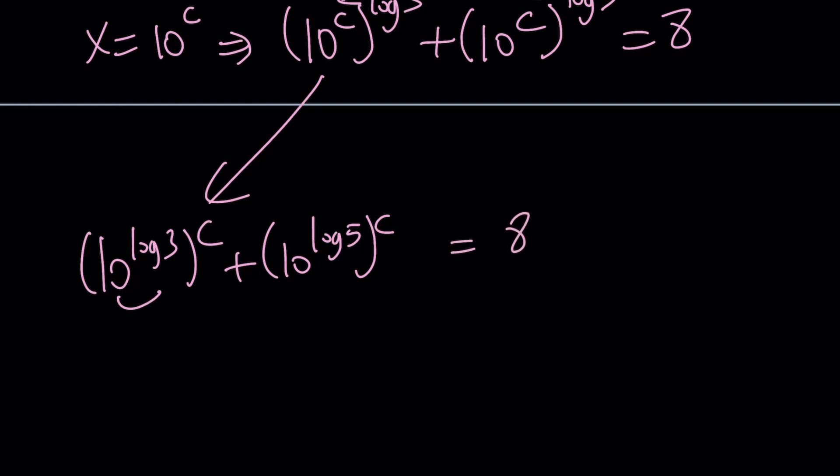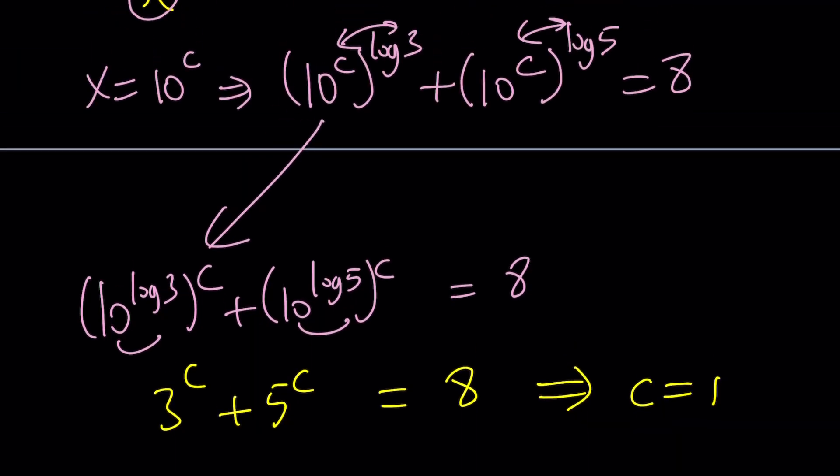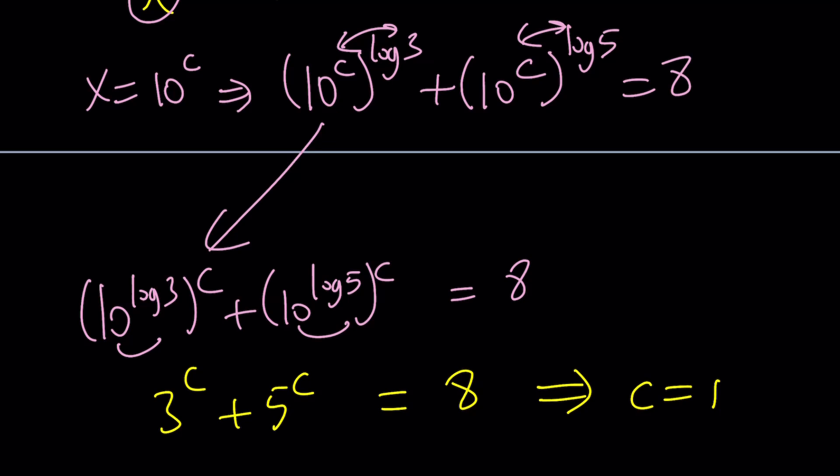And from the formula or the identity we just talked about, this is 3, and this is 5. Isn't that awesome? We got something super manageable. And obviously, 3 to the c plus 5 to the c is equal to 8. And this implies c is equal to 1. Of course, we can always talk about whether this is the only solution, but before that, let's look at an alternative approach here.